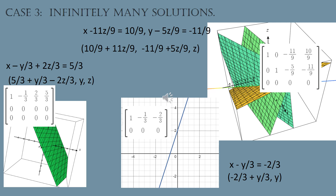For a two-by-two that reduced to just one non-zero row, it reduced down to one line. Reading it as x minus (1/3)y equals -2/3, we define x in terms of y, where y is the independent variable. The solution set is written as (-2/3 + (1/3)y, y) — pick any y you want, x is defined by that formula, and any point you get will be a solution to the system.